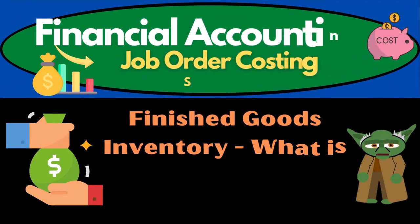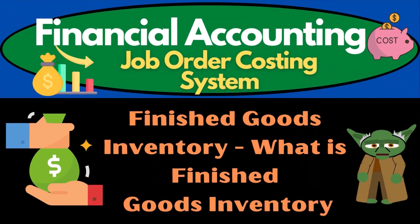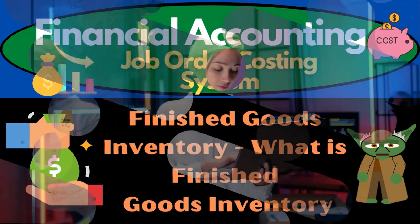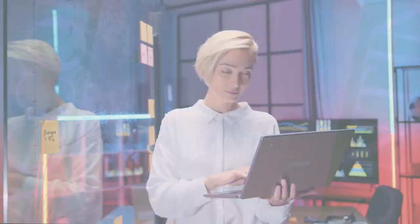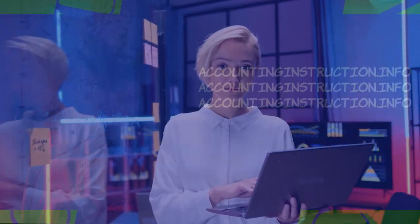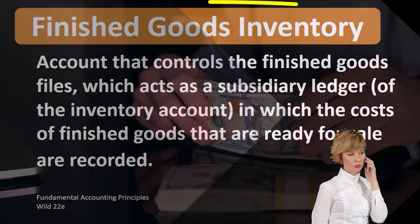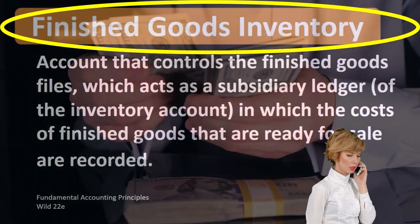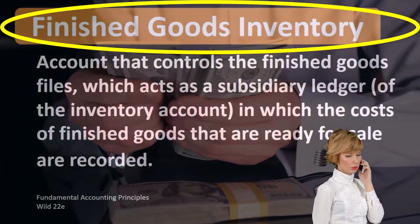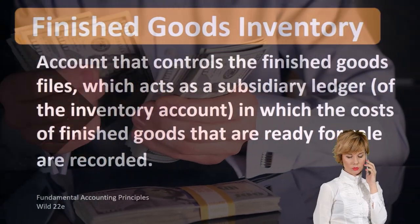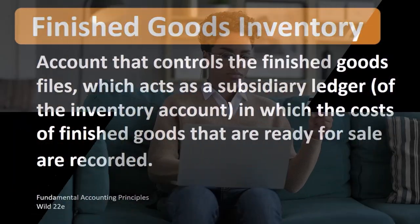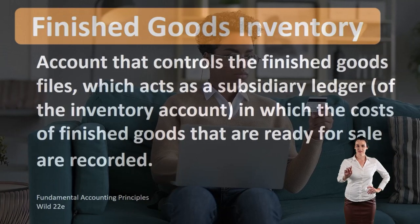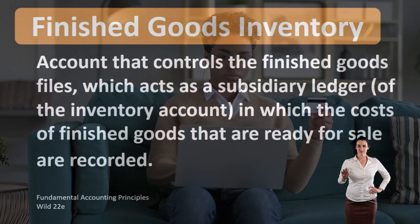In this lecture we will define finished goods inventory. According to Fundamental Accounting Principles Wild 22nd edition, the definition of finished goods inventory is an account that controls the finished goods files which act as a subsidiary ledger of the inventory account, in which costs of finished goods that are ready for sale are recorded.